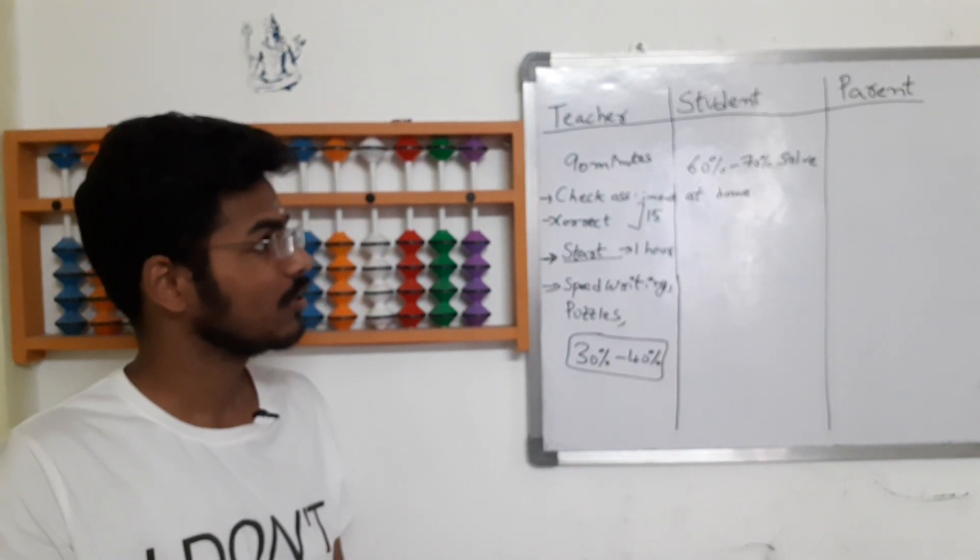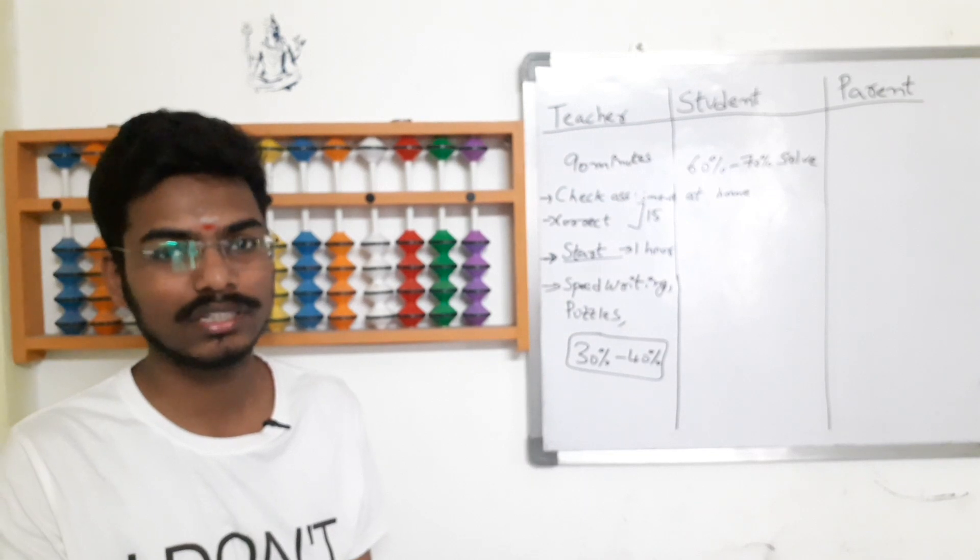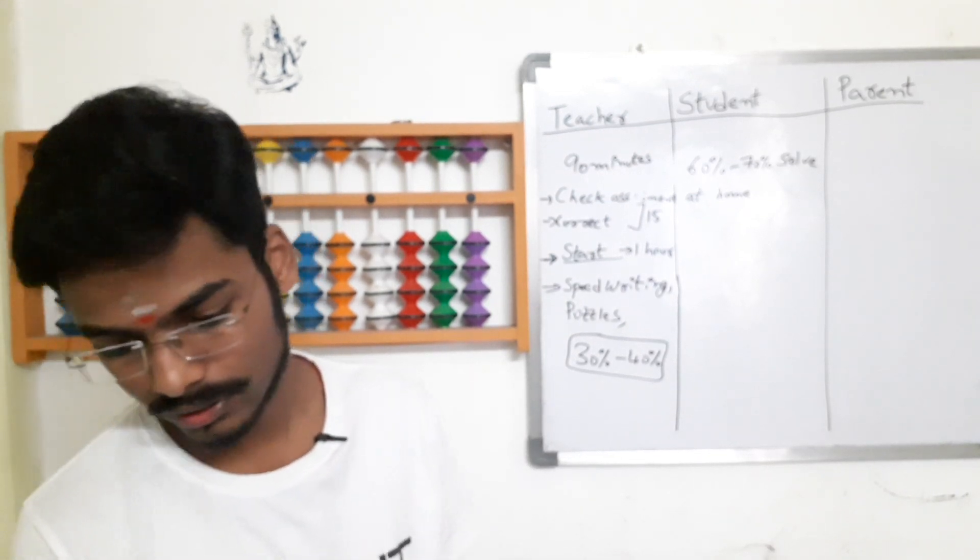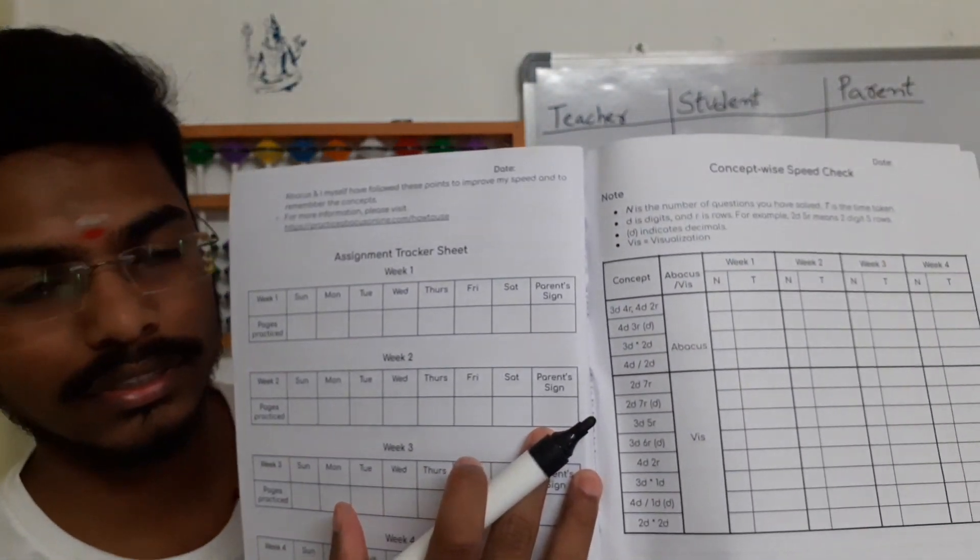And what should parents do? So parents, obviously they should check the student's assignment and also check this tracker sheet and sign it here. We have also given one column for signature.